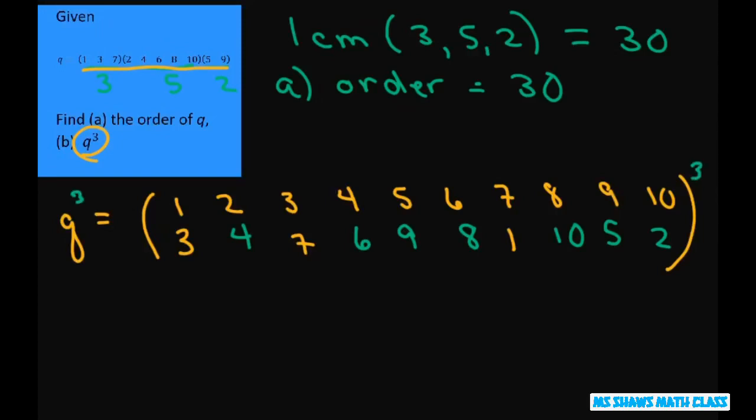So what that means is we're going to map 3 times. So I'm going to write this out as 1, 2, 3, 4, 5, 6, 7, 8, 9, 10.